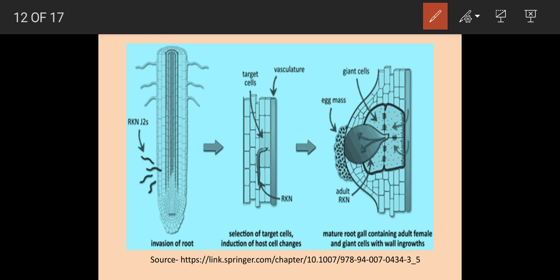These giant cells attract nutrients from surrounding cells and serve as feeder cells for the nematode. Excessive enlargement and division of all types of cells surrounding the giant cells causes swelling of the root. As the female enlarges due to feeding and produces her egg sac, she pushes outward, splits the cortex, and is exposed on the surface of the root — sometimes remaining completely covered depending on the nematode's position. The gelatinous egg mass appears on the root surface. As a result of nematode infection, the infected host plant easily gets attacked by other parasitic fungi such as Fusarium, Rhizoctonia, and Pythium.